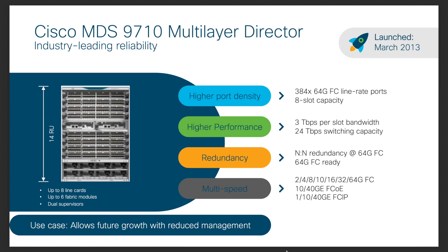Moving on to the second model, the MDS 9710, launched in March 2013. It can support up to 48 terabits per second of chassis bandwidth using 384 ports, supporting 2GB up to 64GB fiber channel line rate speeds. Being one of the best-selling directors in the industry, this is the chassis for those looking for redundancy, flexibility, and future growth. This chassis has eight line card slots, eight PSU slots, and can accommodate up to six fabric modules. The MDS 9710 provides all the benefits of the MDS 9706 along with higher port density and n+2 to n+2 grid level power supply redundancy.